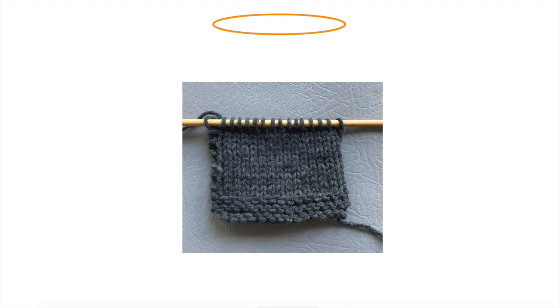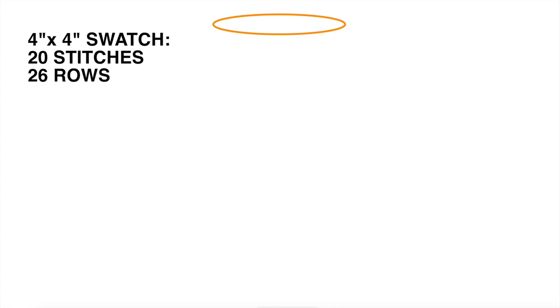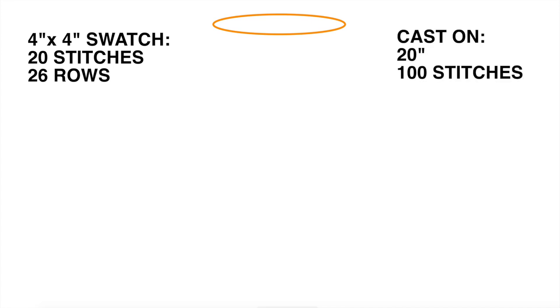First, knit a swatch and count how many rows and stitches you have in 4 inches, then write it down. Let's say I have 20 stitches and 26 rows in my 4-inch swatch. For a head opening of about 20 inches, that's 20 stitches times 5, so I will cast on 100 stitches to start with.